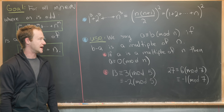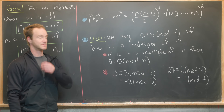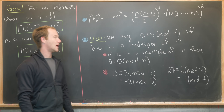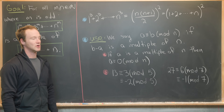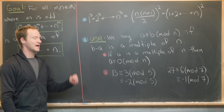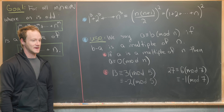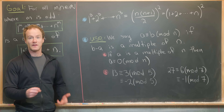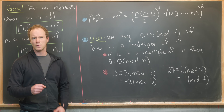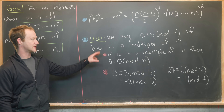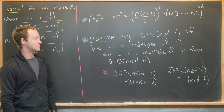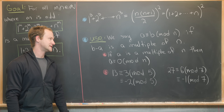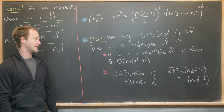We're going to prove this for an arbitrary odd m using the notion of congruence modulo n. We say that a is congruent to b mod n if b minus a is a multiple of n. Sometimes we also say that n divides b minus a, or that a and b have the same remainder after dividing by n. If a is a multiple of n, then a is congruent to 0 mod n, because a minus 0 is a multiple of n.